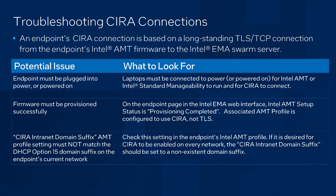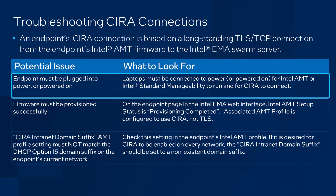Finally, let's talk about troubleshooting CIRA connections. CIRA connections enable out-of-band management through the cloud, and this is accomplished via a long-standing connection from the endpoint's AMT or ISM firmware to the Emma swarm server. There are a number of potential issues to think about when troubleshooting CIRA connections, and we'll start with the fundamentals. First, and especially relevant for laptops, endpoints must be connected to power or be actively powered on in order for AMT or ISM to run and for the firmware to attempt to make a CIRA connection.